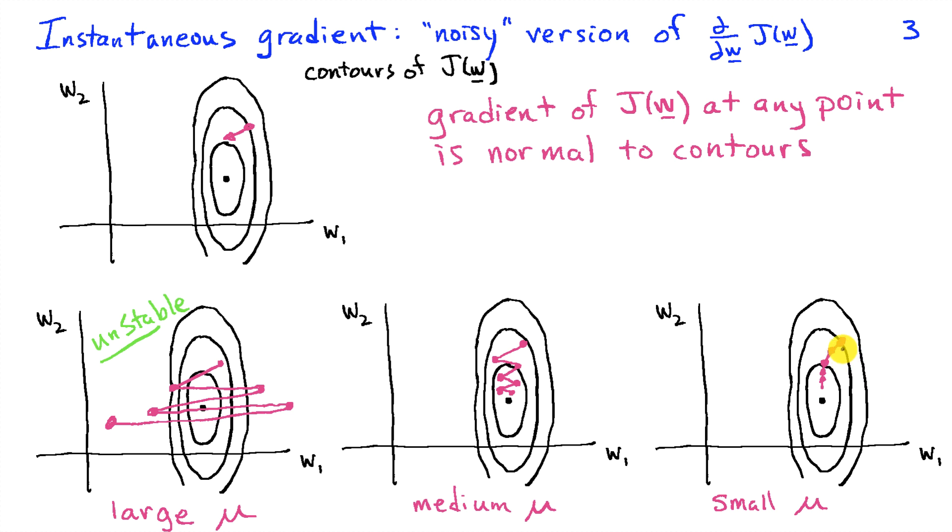On the other hand, if mu is very small, then I'm going to take very small steps, and you can see that the trajectory is going to tend to be smoother toward the optimum. When we do this with the instantaneous gradient, we're going to have some randomness or bounciness to these trajectories.